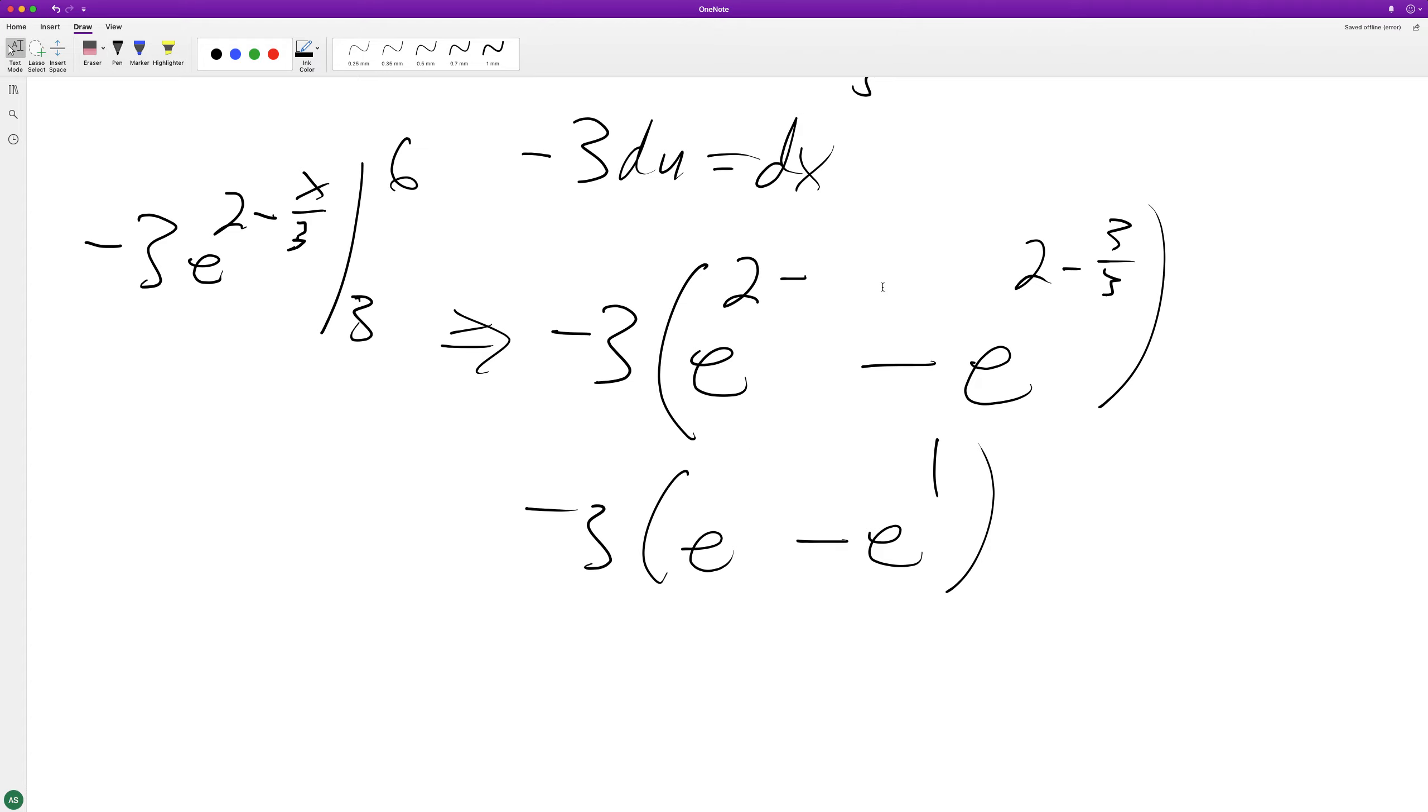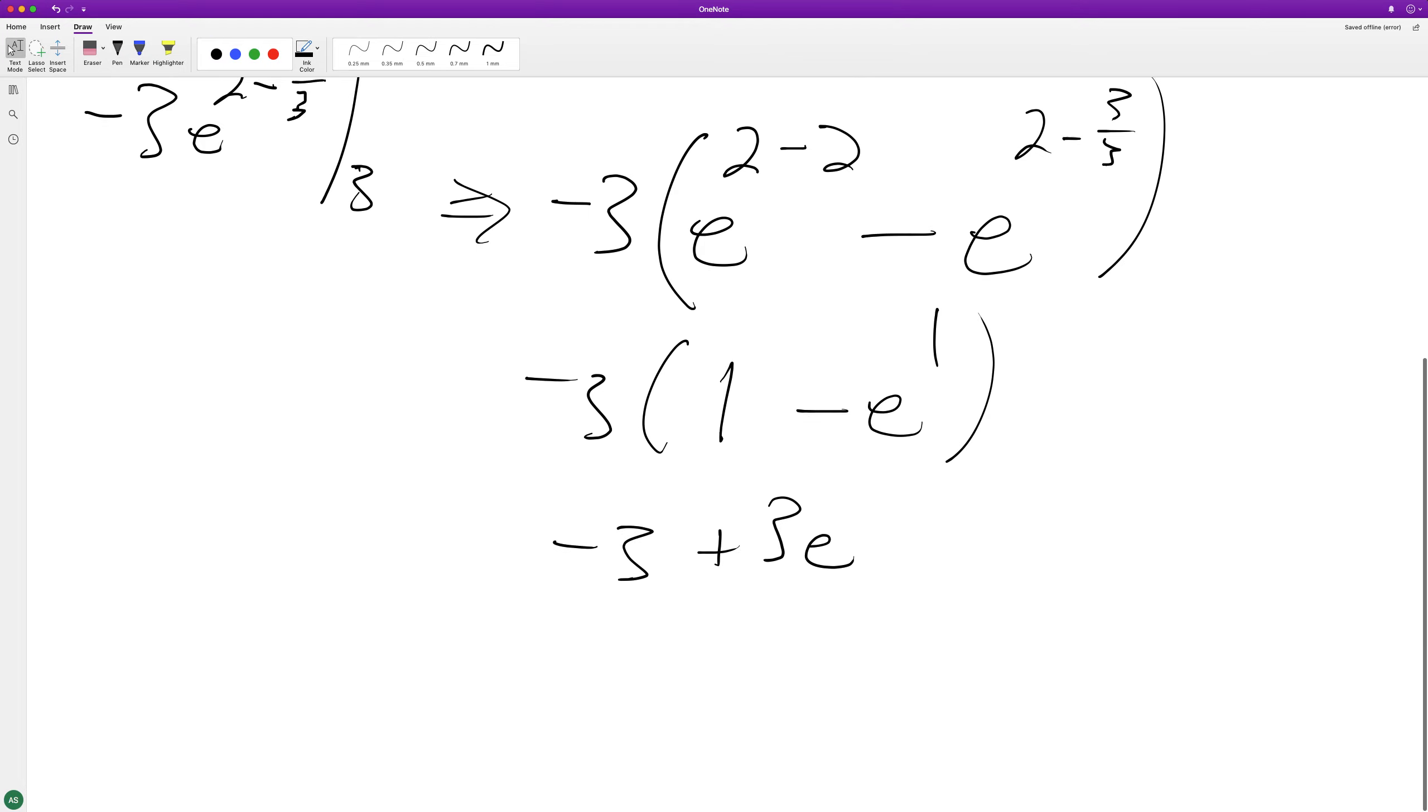This was two, and that goes to zero, and this becomes one. And when we distribute, we get negative three plus three E, which is the same thing as three E minus three.